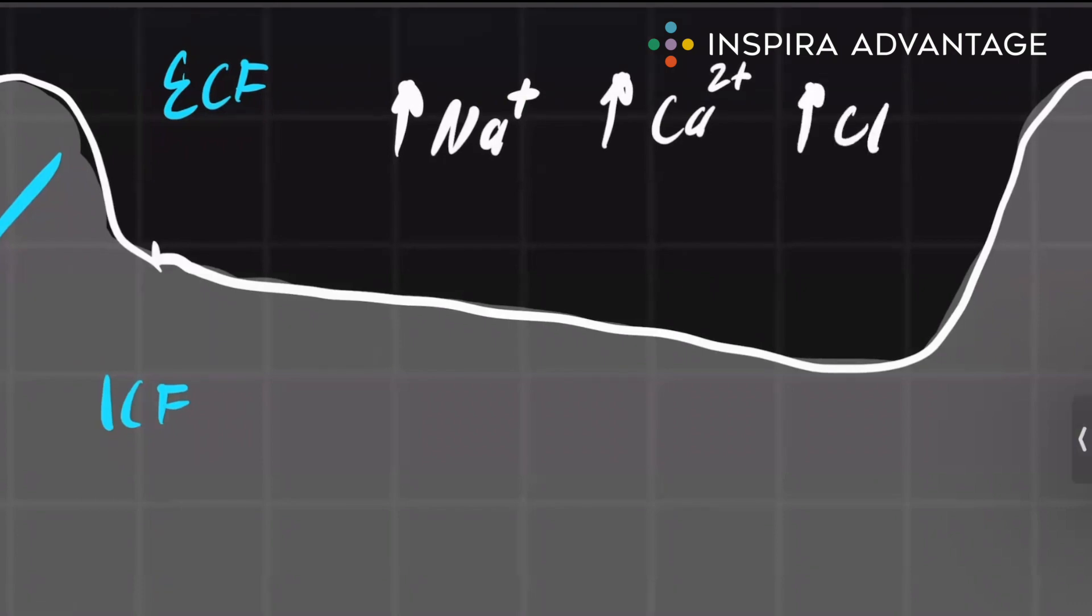And then, kind of interestingly, the only negatively charged ion we care about is chlorine. And you guessed it, it's in a higher concentration in the ECF.